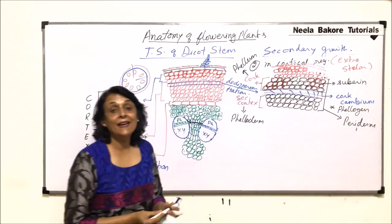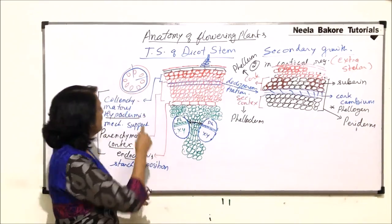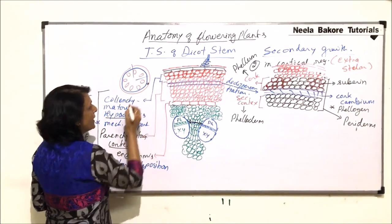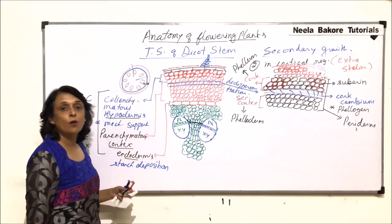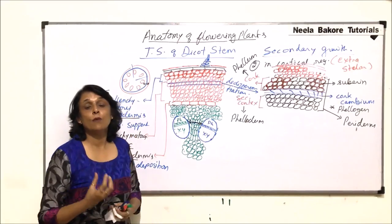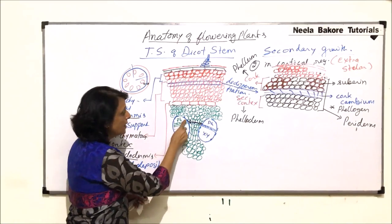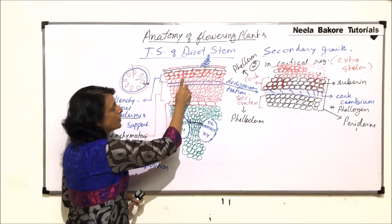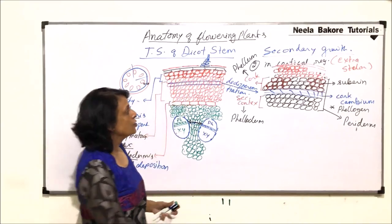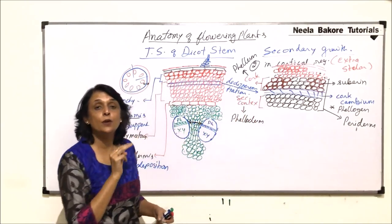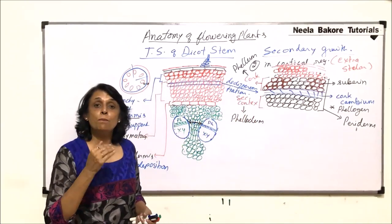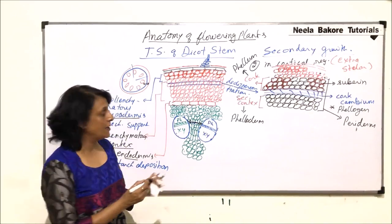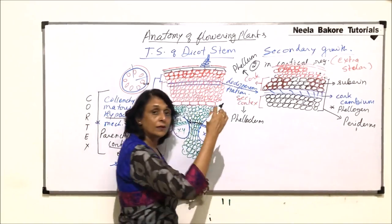Now, layers are added: outside there is cork added, and inside there is secondary cortex. Rings of different tissues are added — secondary phloem ring, secondary xylem ring, cork ring, and secondary cortex ring. Let us write down the primary tissue layers in sequence.